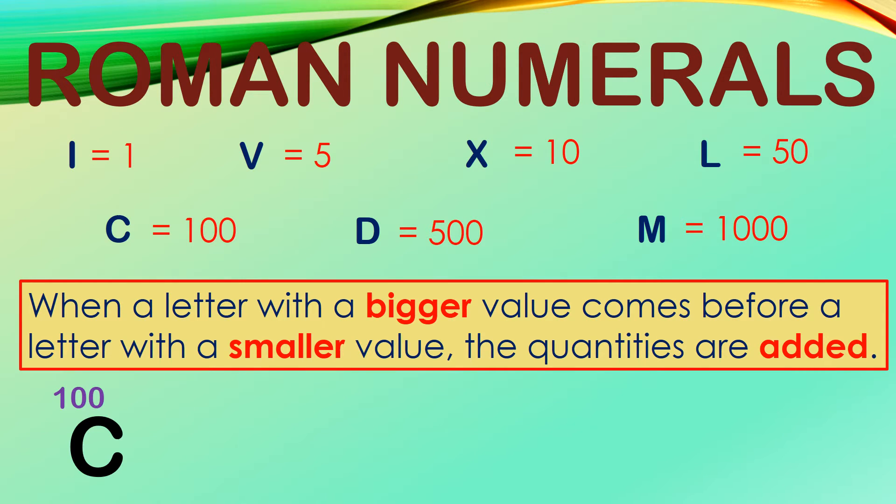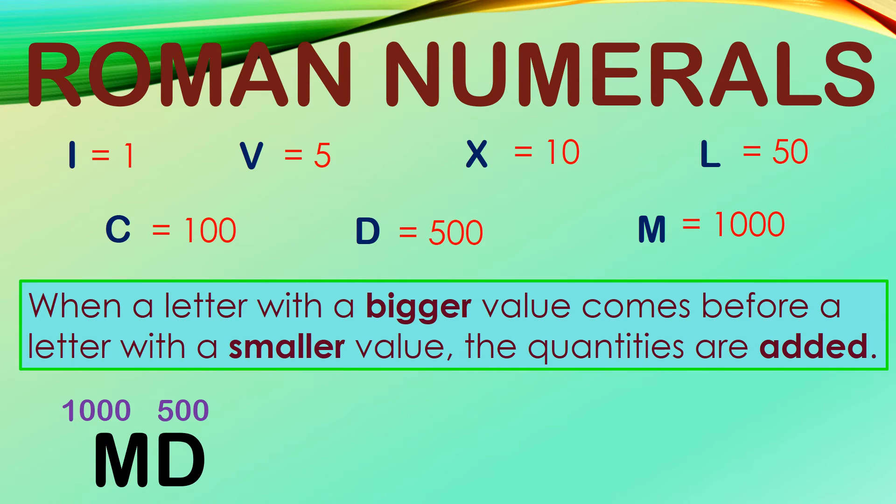C is 100. If written before L, which is 50, it is like 100 plus 50, which altogether is 150. We write D for 500. If written before C, which is 100, we add the values to 600. Let's have two more examples. M for 1,000, if written before D for 500, as we said earlier, when a letter with a bigger value comes before a letter with a smaller value, the quantities are added. So, MD equals 1,500.